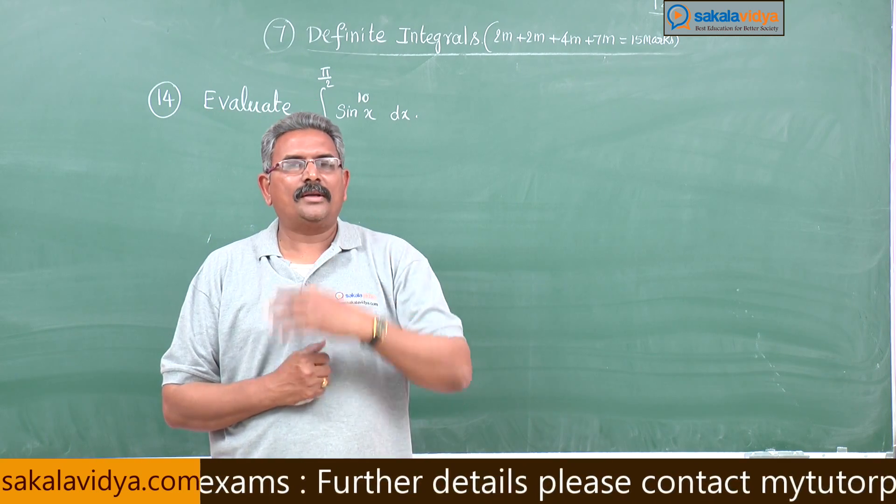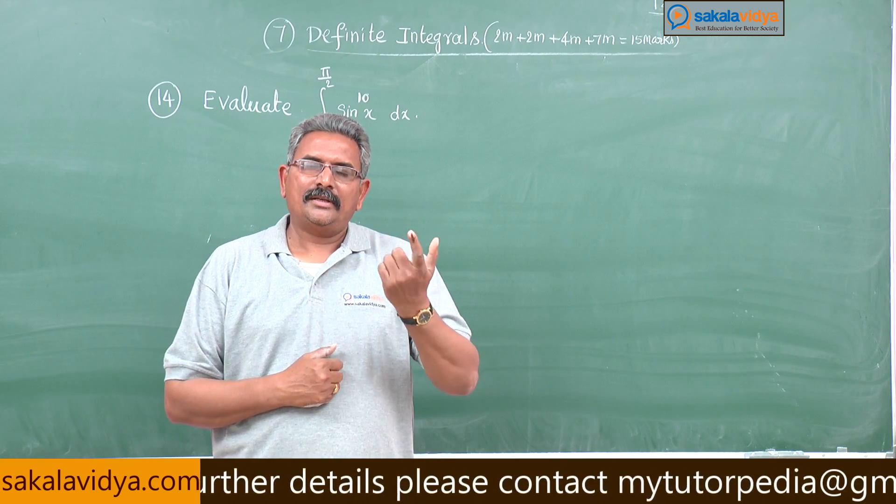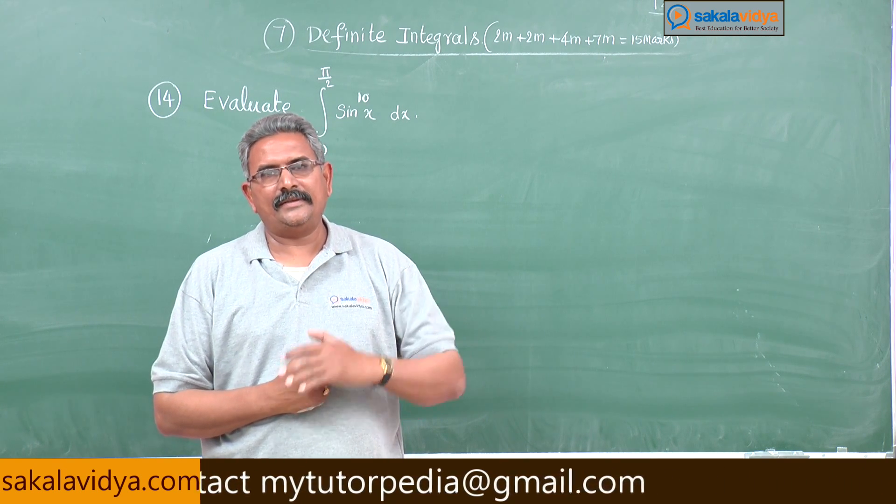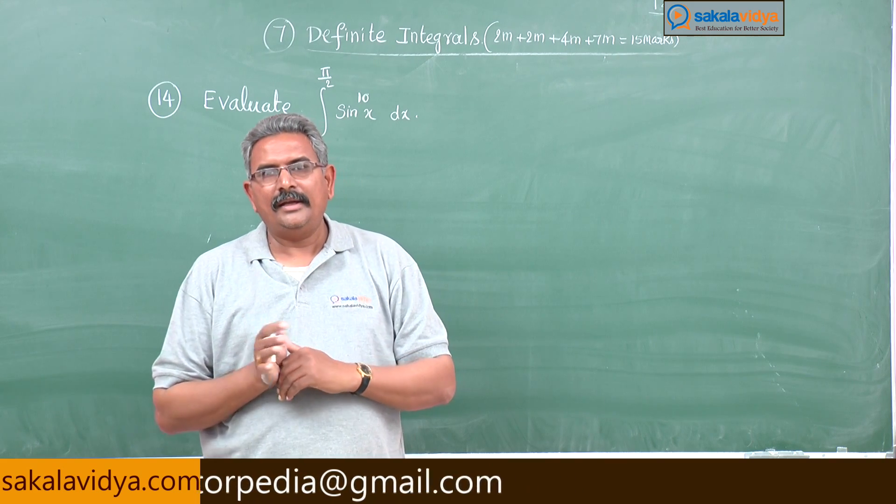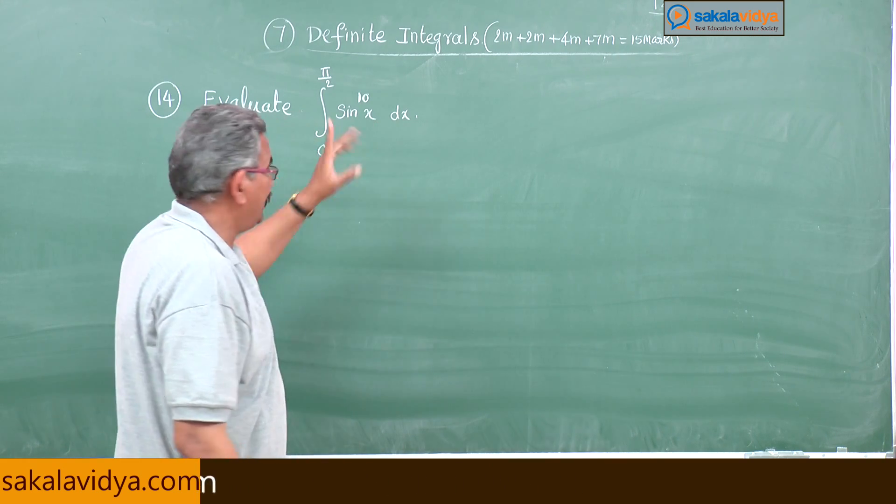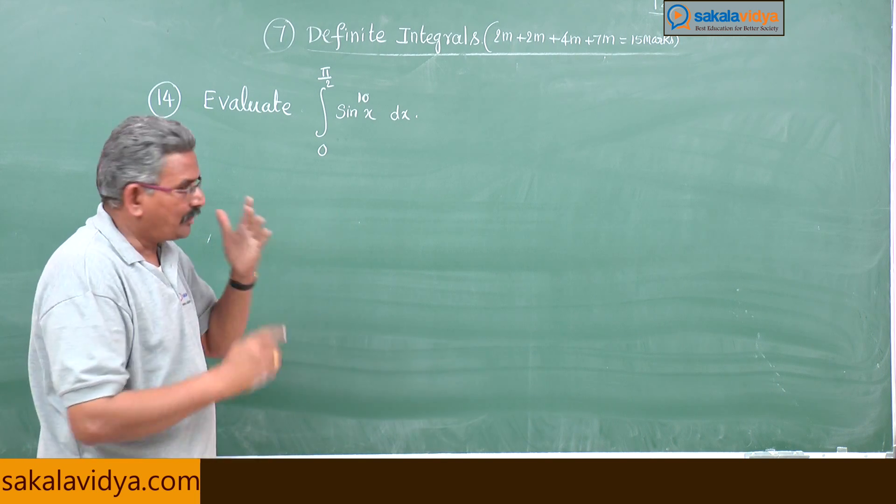We have two formulae that is also called Wallis formula. Integral 0 to pi by 2 sin x to the power of n dx. If n is even one formula, n is odd other formula we have to apply. Here n will be even, so let us do the problem now.